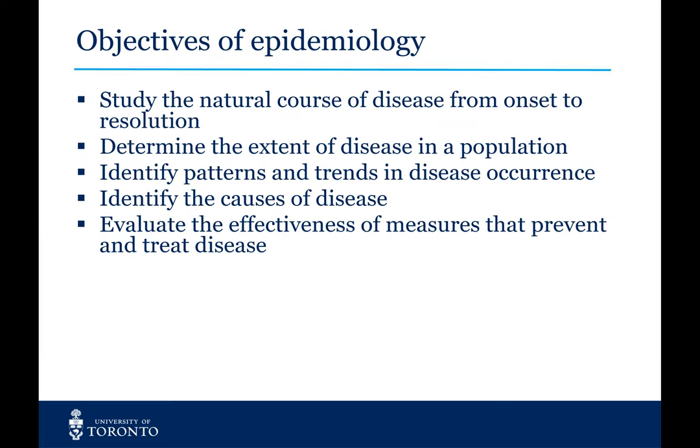This can include the study of the natural course of a disease from onset to resolution, determining the extent of disease in a population, and identifying patterns and trends in disease occurrence — so who's getting disease, where do they live, why are they getting it, how are they different from those that are not getting a particular disease. We can also do work to identify the causes of disease, as well as evaluating the effectiveness of measures like public health interventions designed to prevent or treat disease.